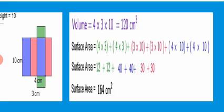For the surface area: the two green rectangles have sides 4 and 3, so 4×3 plus 4×3. The two pink rectangles are 3 times 10, so 3×10 plus 3×10. The two purple rectangles have sides 4 and 10, so 4×10 plus 4×10. That gives us 12 plus 12 plus 40 plus 40 plus 30 plus 30. The sum is 164, so the surface area equals 164.